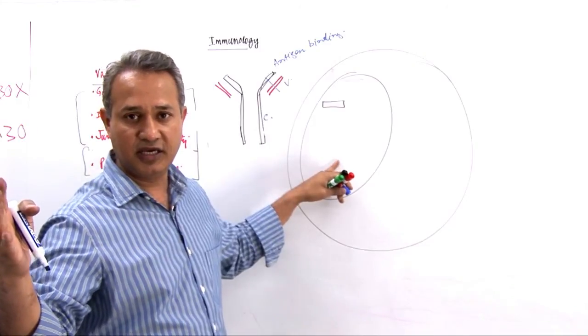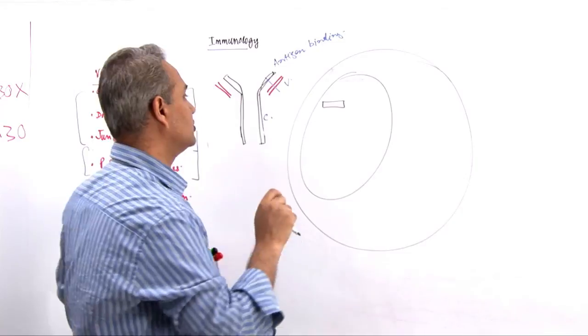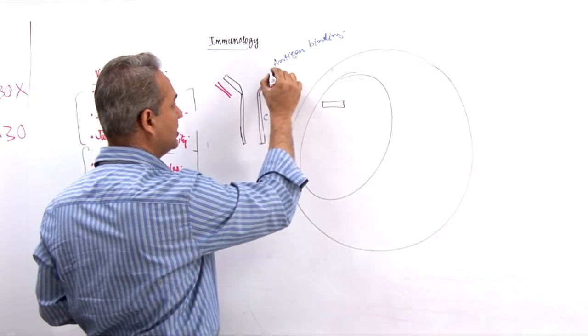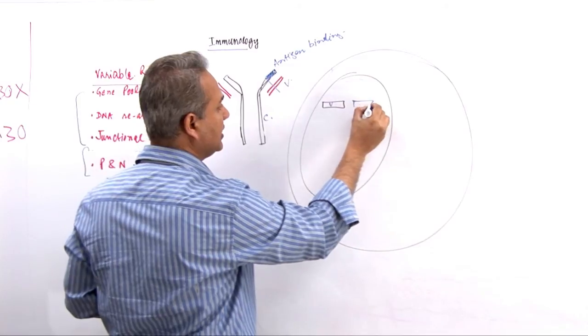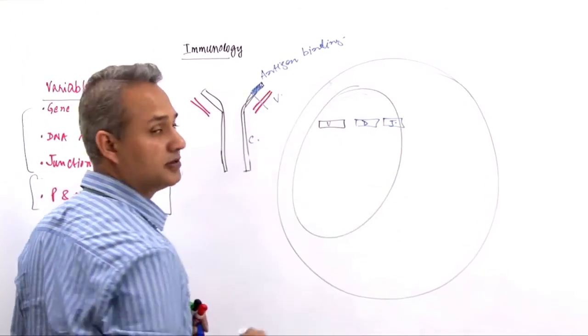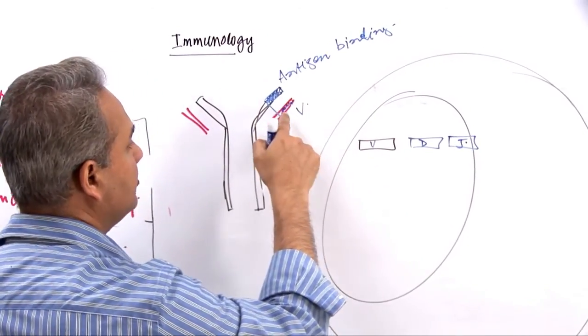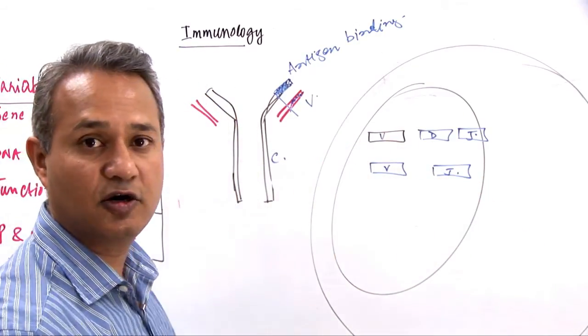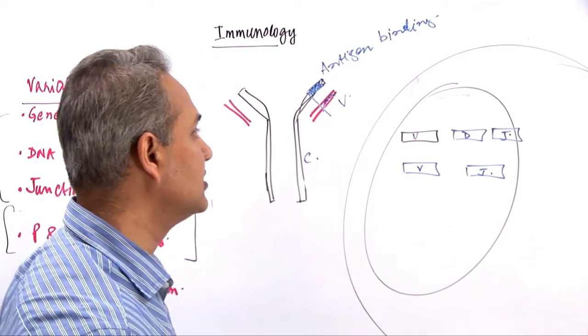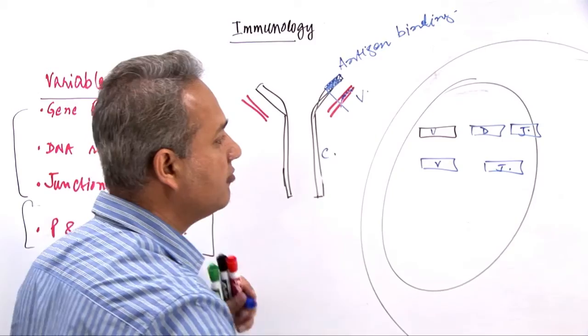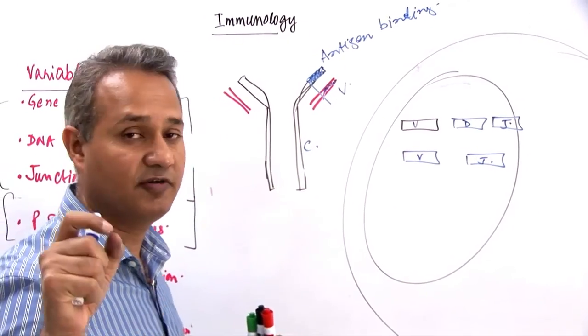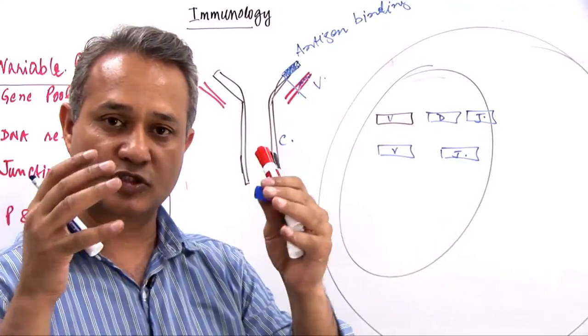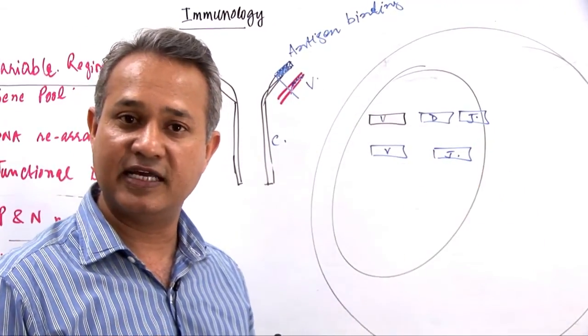Now let us talk about how that happens. The variable region of the heavy chain is created by V, D, and J gene pools. The variable region of the light chain is created by V and J gene pools. The DNA rearrangements occur in this way: we pick up one gene from the V, one gene from the D, one gene from the J. First, D and J are connected. The enzyme that helps in this is RAG1 and RAG2. These enzymes connect the genes together.